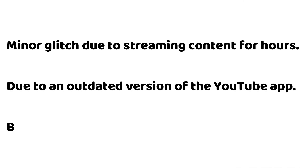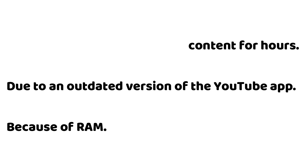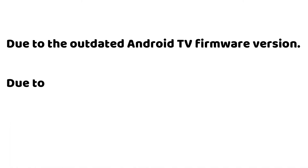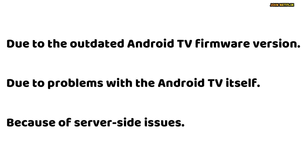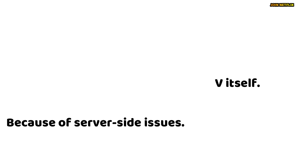Minor glitches while streaming content for hours can occur due to an outdated version of the YouTube app, because of RAM limitations, due to an outdated Android TV firmware version, due to problems with the Android TV itself, or because of server-side issues.